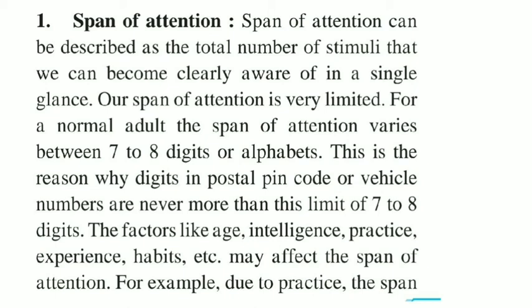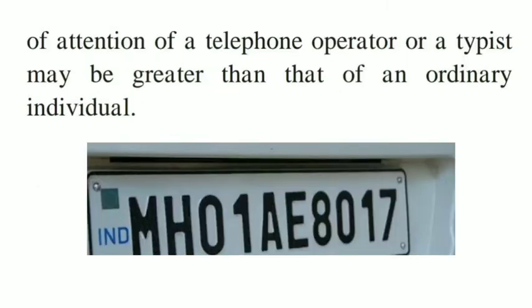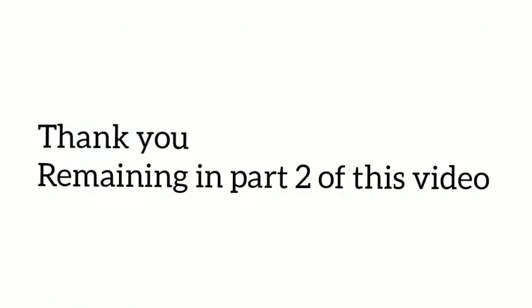You can remember more than those numbers only after repeating them again and again — that would be your memory part. Span of attention means only in one glance how many numbers you can remember. If I give you a 10-digit phone number for a fraction of a second, in one glance you can only remember a maximum of 7 to 8 numbers. Factors like age, intelligence, practice, experience, and habits may affect the span of attention. For example, due to practice, the span of attention of a telephone operator or typist may be greater than an ordinary individual. So you can see on this number plate the number 8017 — in just one glance you can remember those 4 digits easily.